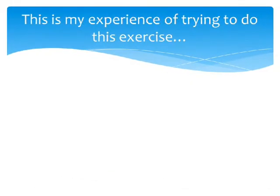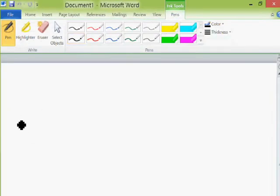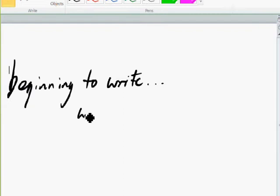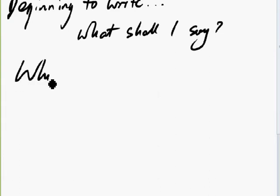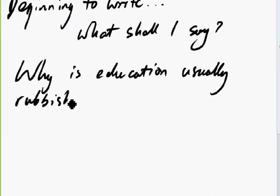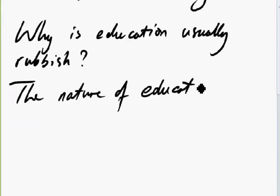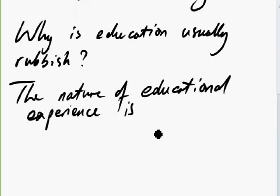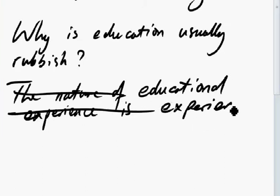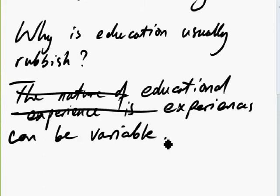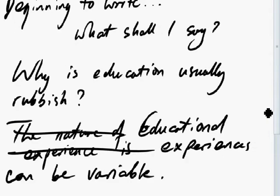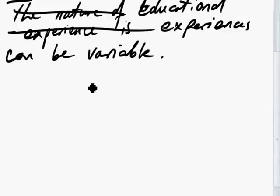This is the way that I write and I'm going to talk you through the process of writing something. I don't know what I'm going to write yet, but I'm beginning to write and this is the process I'm going through. So what should I say? I'll come back to the question: 'Why is education usually rubbish?' I'm going to write a paragraph about this. Maybe it's better to say educational experiences can be variable — that's saying everybody has a different experience of education, and that's a problem.